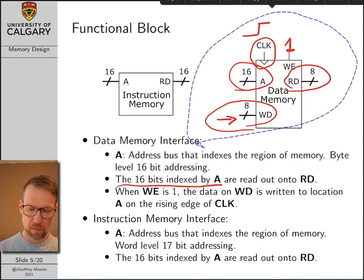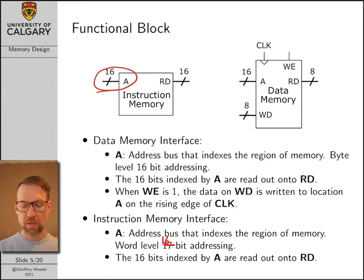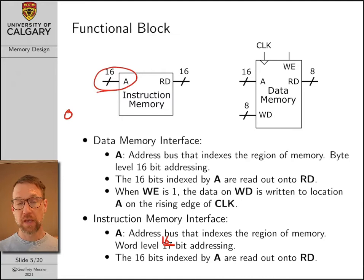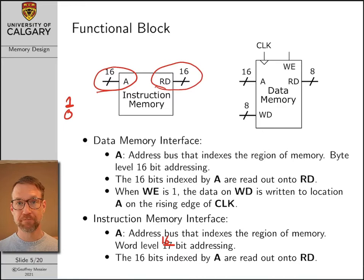Talking about the instruction memory: instruction memory uses 16-bit addressing as well, but rather than using 8-bit words, it uses 16-bit words. So each word in instruction memory is 2 bytes long. The addressing used is word-level rather than byte-level addressing. That means the first 16-bit instruction has address 0, the second has address 1, and so on. Instruction memory is also implemented using combinational logic — as soon as you change the value on the address bus, the new value is immediately output on our 16-bit read bus, minus some propagation time.